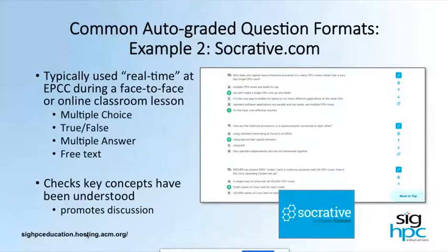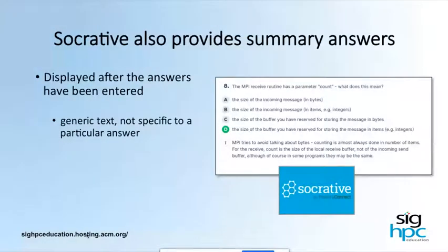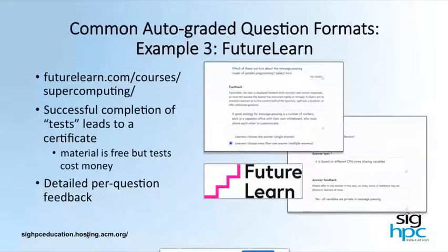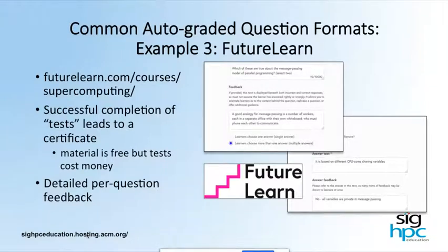Socrative, which is used at EPCC, has many of the same formats — multiple choice, true/false, multiple answer, and free text — and they also have a way to put the answer in as a rough answer for people. The next example is FutureLearn, another massively open online course platform like Open edX. Here, successful completion of many tests leads to a certificate from the platform, just as Open edX or edX does, and you have detailed per-question feedback. This includes open-ended text-formatted questions.